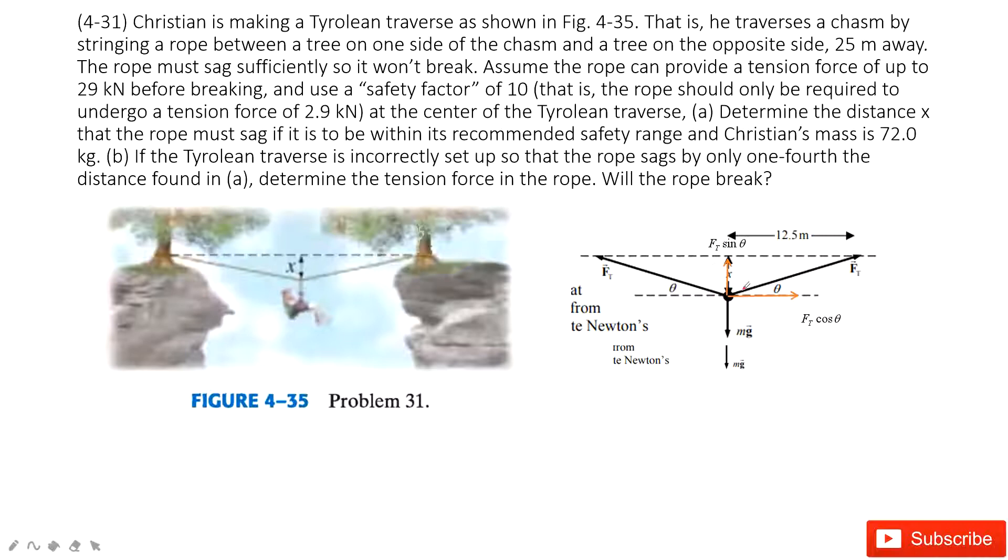Therefore, if this person wants to keep stationary in the vertical direction, he must keep the force balanced. That is 2 ft sine theta minus mg equals zero.